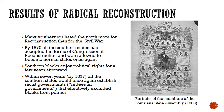Congressional Reconstruction had wide-reaching consequences. Many Southerners hated the North more for Reconstruction than they did for the Civil War, believing that using soldiers to force change and totally altering the structure of Southern society was wrong. By 1870, all of the Southern states, even though they disliked it, had accepted the terms of Congressional Reconstruction and were allowed to become normal states again — meaning they ratified the 14th Amendment and allowed Black men to vote, though women of any race were still not allowed to vote.